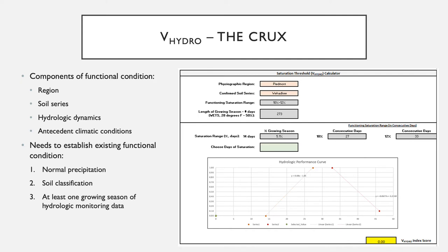While the vegetative variables included in the HGM SOP are important for evaluating the condition and function of wetlands, the continuous saturation V-Hydro variable is really the most important when driving the type of wetland and the condition of wetlands. To actually calculate a V-Hydro score, there are several things that you need to know.